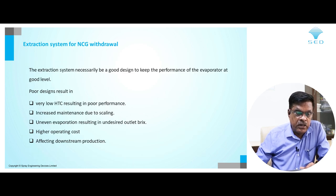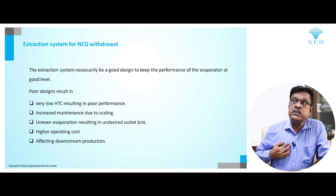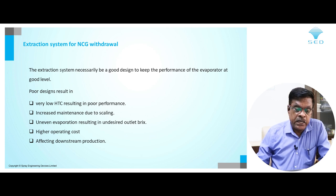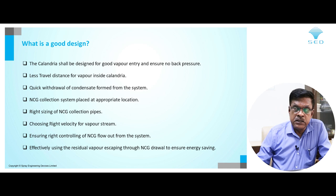We need a good extraction system for NCG withdrawal from the evaporator. Poor extraction results in very low heat transfer coefficients, poor performance, increased maintenance due to scaling, and uneven evaporation resulting in undesired output brix. NCG tends to accumulate comfortably in certain areas of the heating surface — in those areas, there is never any evaporation; juice just circulates with no evaporation happening, while other tubes become overloaded, quickly scale out, give undesired output brix, and result in higher operating costs and downstream production impact.